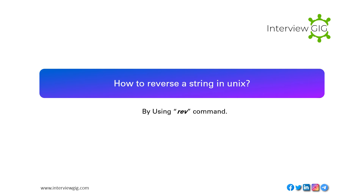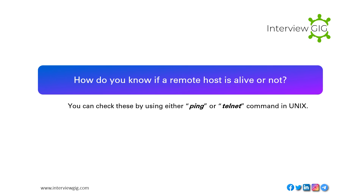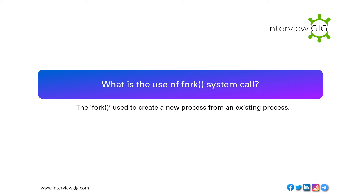How to reverse a string in Unix? By using the rev command. How do you know if a remote host is alive or not? You can check by using either the ping or telnet command in Unix. What is the use of the fork system call? Fork is used to create a new process from an existing process.